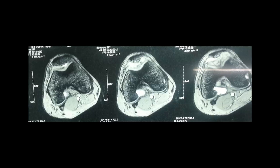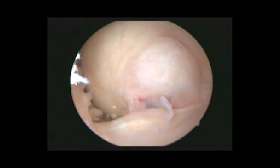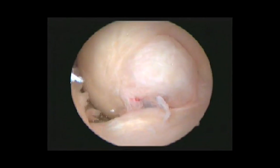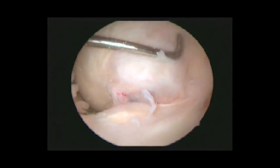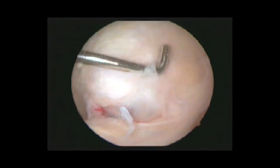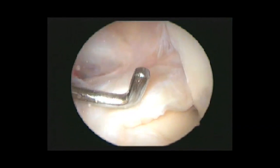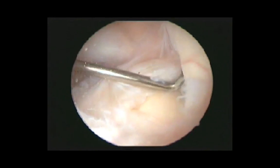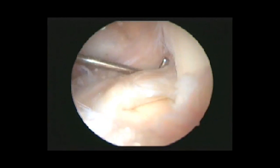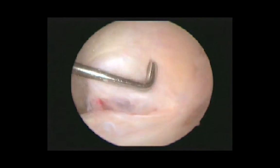It extends into the intercondylar notch, leaving an impression extending up to the tibial plateau, as noticed in these images. In the arthroscopic view, the cyst is extending into the intercondylar notch. A thin bluish membrane can be noticed in the inferior aspect of the cyst, and this is the ACL that has been pushed laterally because the cyst is occupying most of the intercondylar notch.